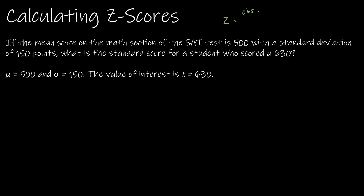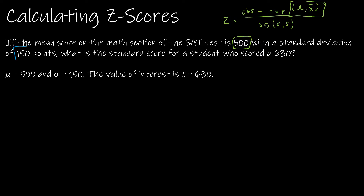Let's take a look at how to calculate a z-score. We're taking the observed value minus the expected value — which could be mu or X-bar — divided by the standard deviation, which could be sigma or s depending on whether it's a population or a sample. For example: the mean score on the math section of the SAT is 500, the standard deviation is 150 points, and we want to find the z-score for a student who scored 630.